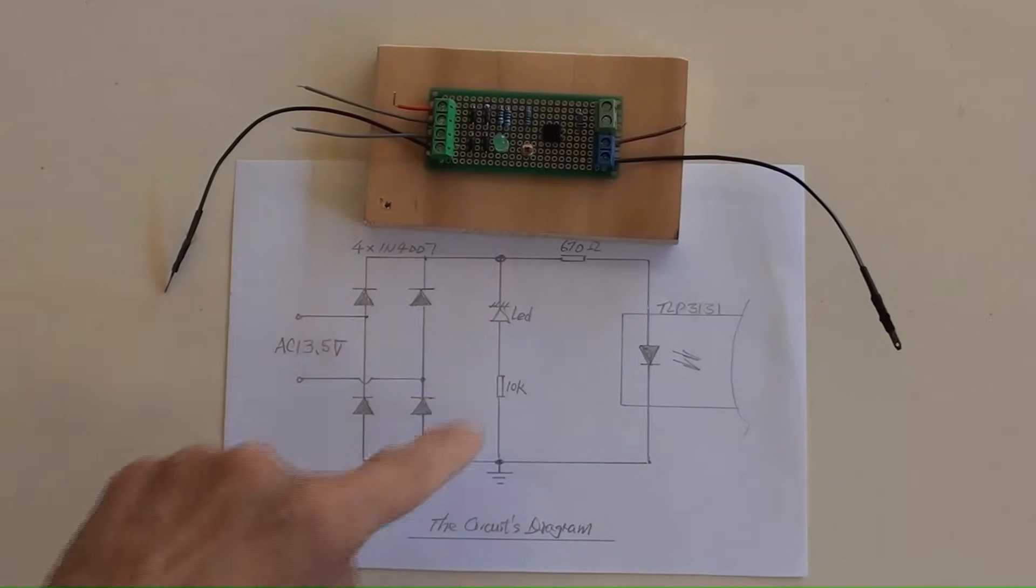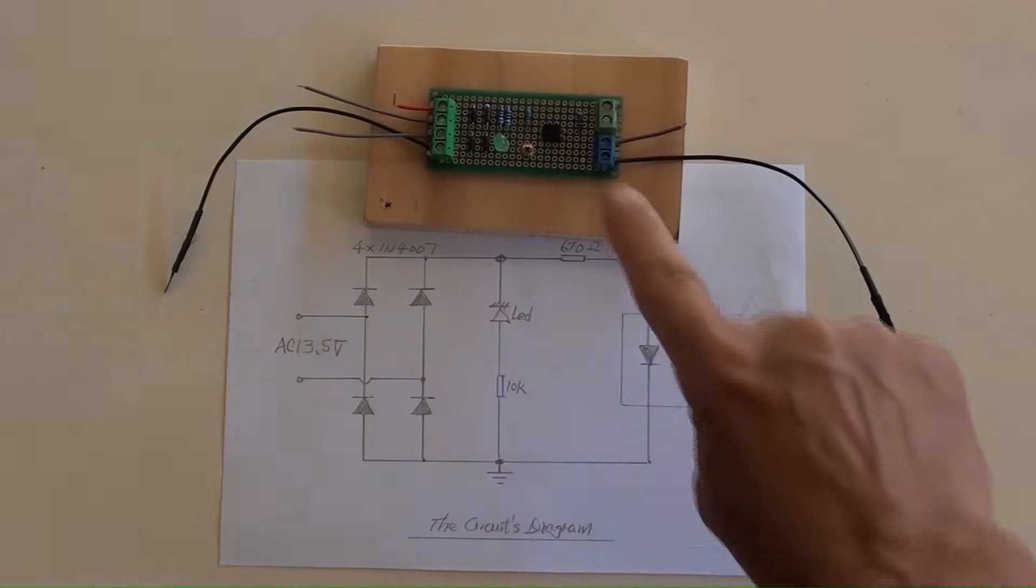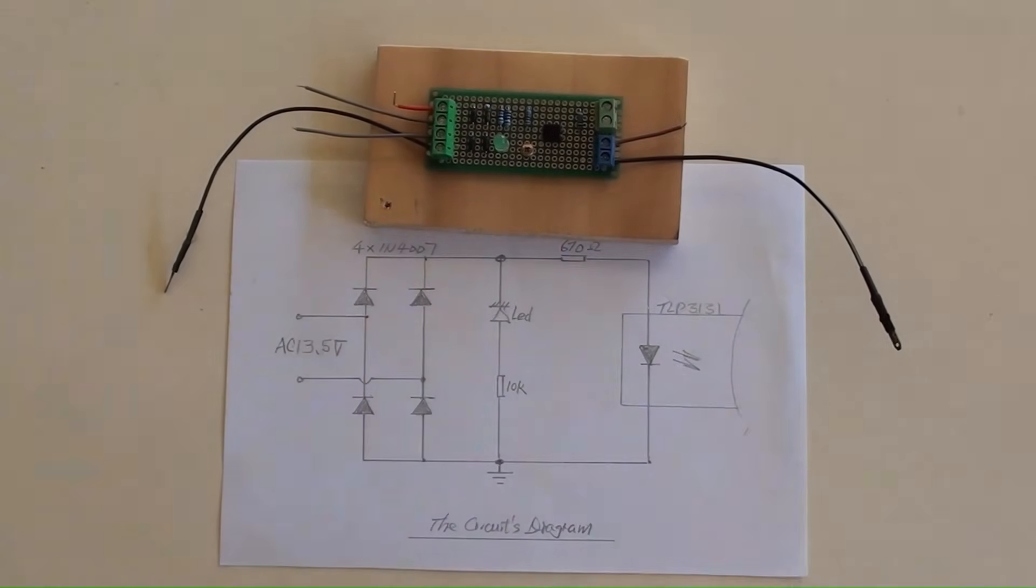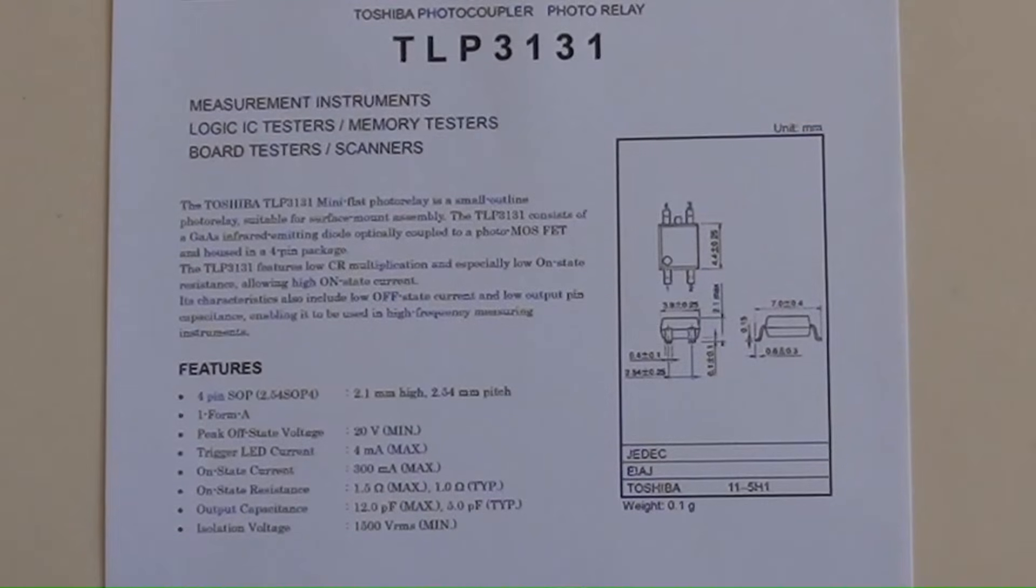That is the LED indicator circuits parts, they are located here. This is an optocoupler, type TLP3131. Only a half part of its circuit is showed, its other part will be showed later. Some of the datasheets for TLP3131 are here.